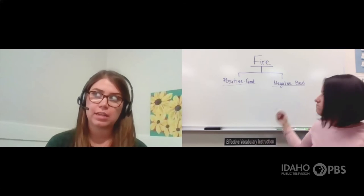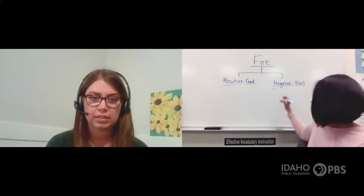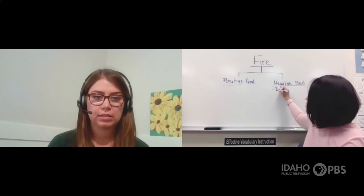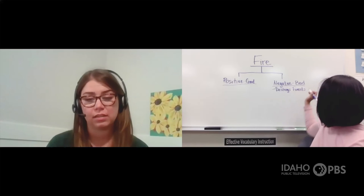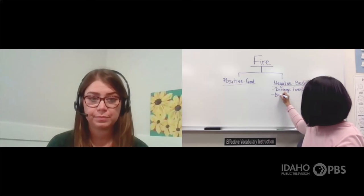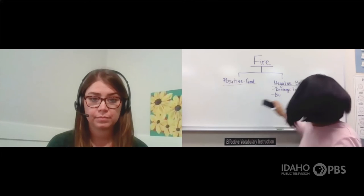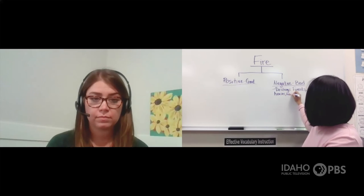I have a tree map here — a tree map gives us a topic at the top and it has little branches to tell you the different subtopics or categories around the main topic. In this case, we have positive details about fire or negative details about fire. Let's start with the negative so that we can finish off with something good. Let's think about what are some bad or negative things that fire can do.